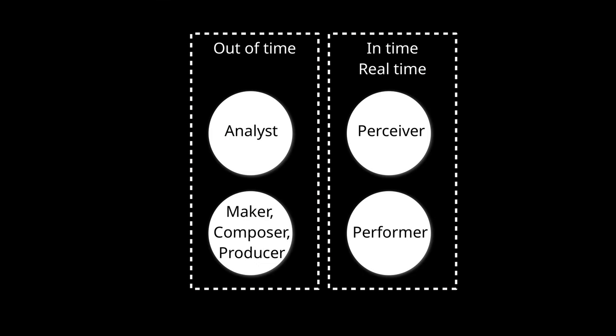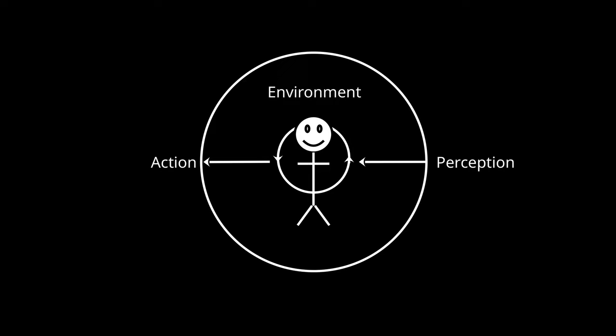In the first part of the book, I present the musicking quadrant as a way to understand the different musical roles of instrument makers, composers, producers, performers, perceivers, and analysts. Then I introduce the embodied music cognition framework and argue how this can be used to understand more about new musicking technologies.